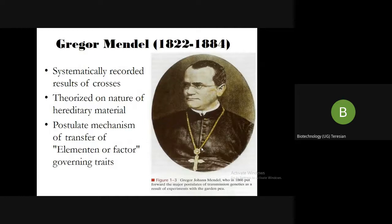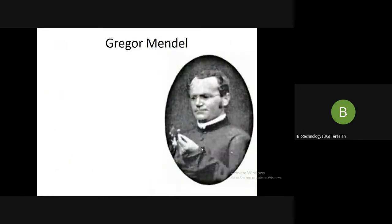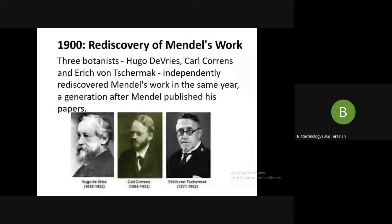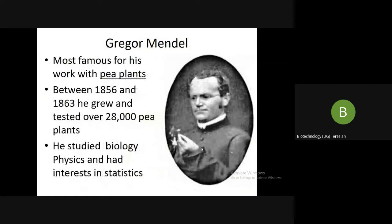Coming to Mendelian genetics, Gregor Mendel systematically recorded all his results. He had studied statistics, physics, and biology. Today whatever we call a gene, he called it a factor. He carried out his experiments on pea plants between the years 1856 and 1863. We shall deal with his studies in detail in the coming video sections.